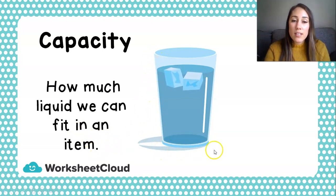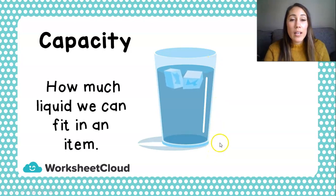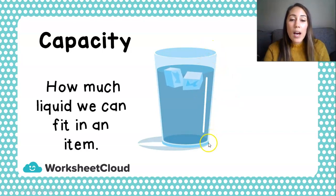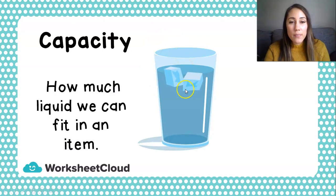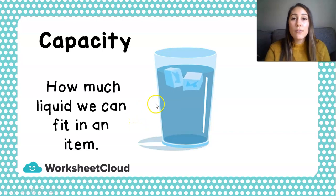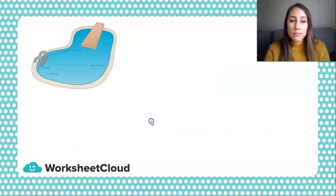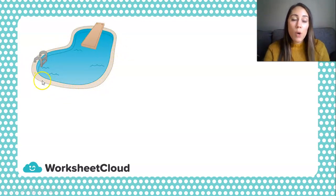If we use this glass as an example, how much water or liquid can we fit inside this glass? Or, how much liquid is already inside the glass? Here you can see the ice blocks are floating around on top, so this glass is full. How much water can fit inside this pool, or how much can this pool hold? That would be the capacity of this pool.